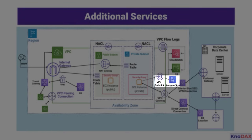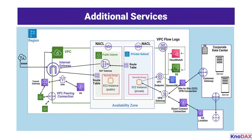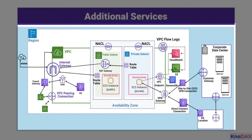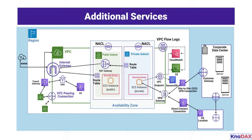AWS services like DynamoDB are accessed securely from within the architecture, ensuring compliance with network and security best practices. In conclusion, this diagram demonstrates a robust, scalable, and secure AWS network architecture, combining public and private resources, connectivity options, and monitoring solutions. Thank you for watching this walkthrough.